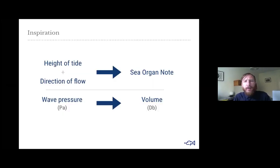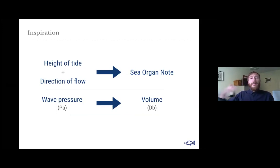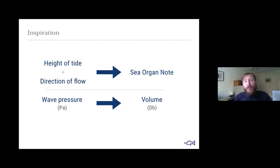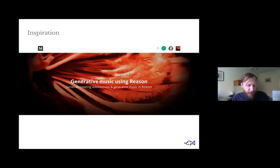If you think about it as having two inputs: the height of the tide determines how many notes are playing because each step has different chambers for the air to flow through, and the direction of flow of the waves. The wave pressure more directly equates to the volume in decibels.